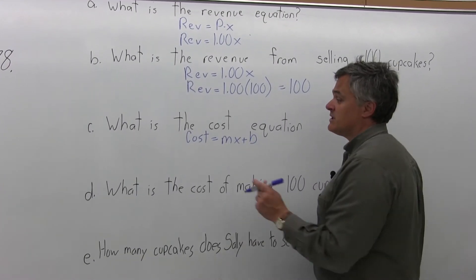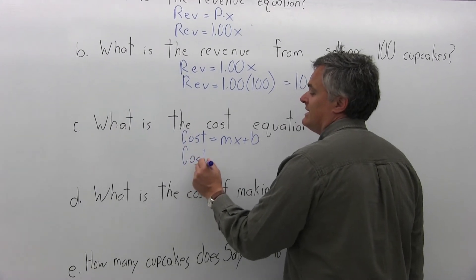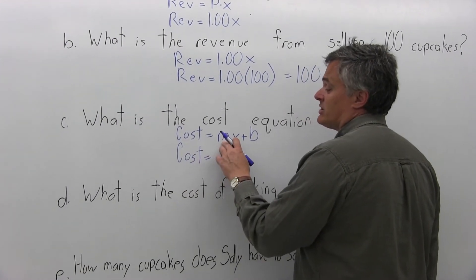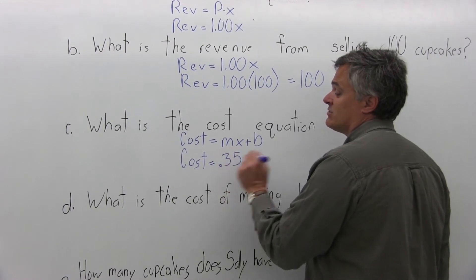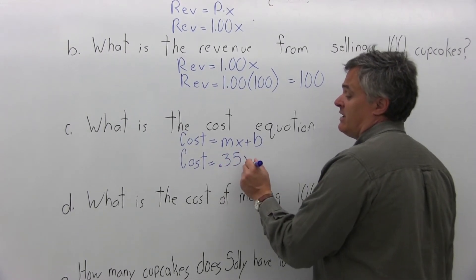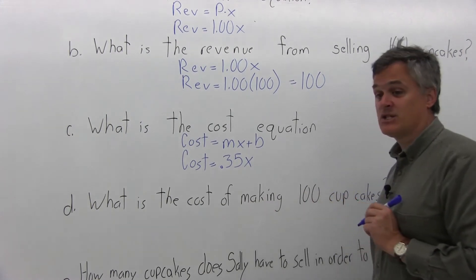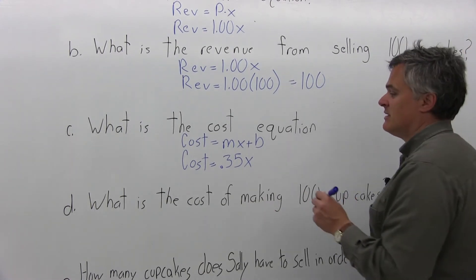So for this particular problem, the cost equals M, the marginal cost or cost per item is 35 cents, which I'll enter as .35. The X just stays in as X to represent the number of cupcakes that are made.